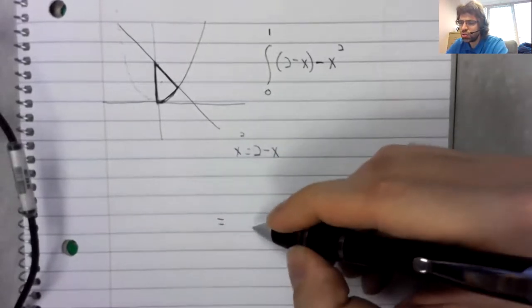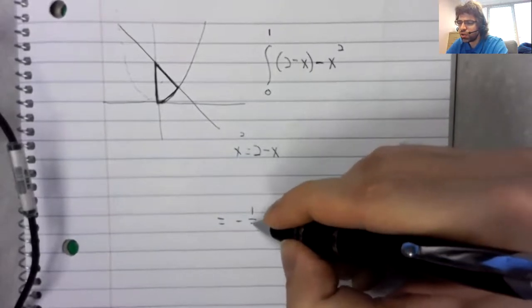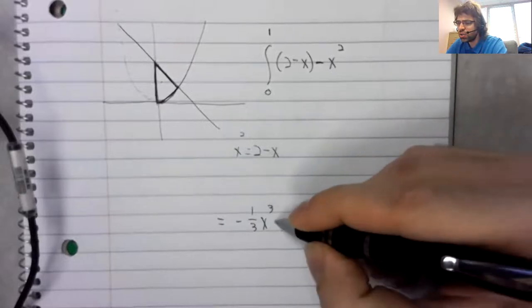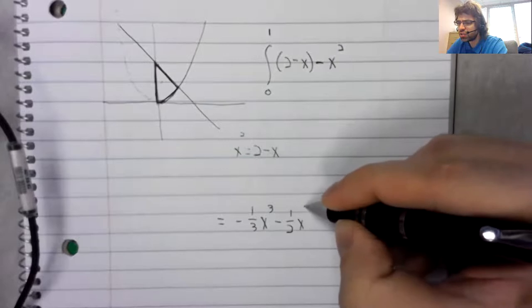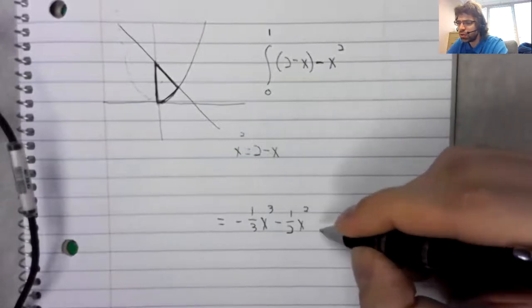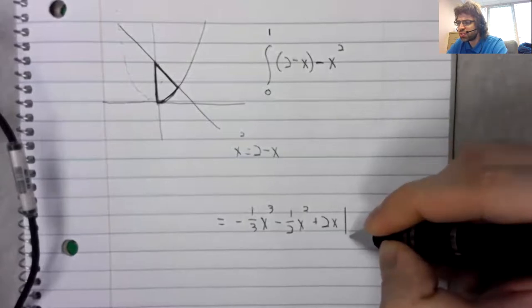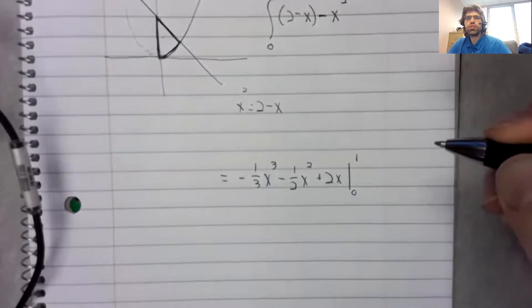So let's see. Negative one third x cubed minus one half x squared plus two x, from zero to one.